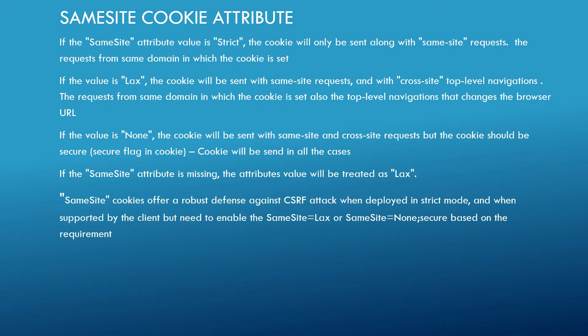Let us see more detail on the attribute values. The first value is strict. The cookie will only be sent along with same-site requests — meaning requests from the same domain on which the cookie is set. For example, if I set a cookie with the domain www.example.com, whenever I access www.example.com directly from the browser, the corresponding cookie will also be sent as part of the request.